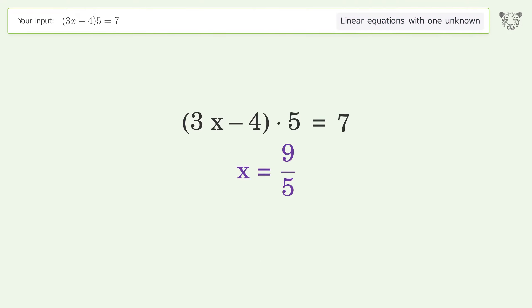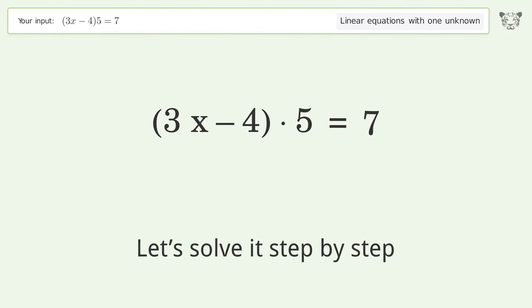You ask Tiger to solve this. This deals with linear equations with one unknown. The final result is x equals 9 over 5. Let's solve it step by step. Simplify the expression.